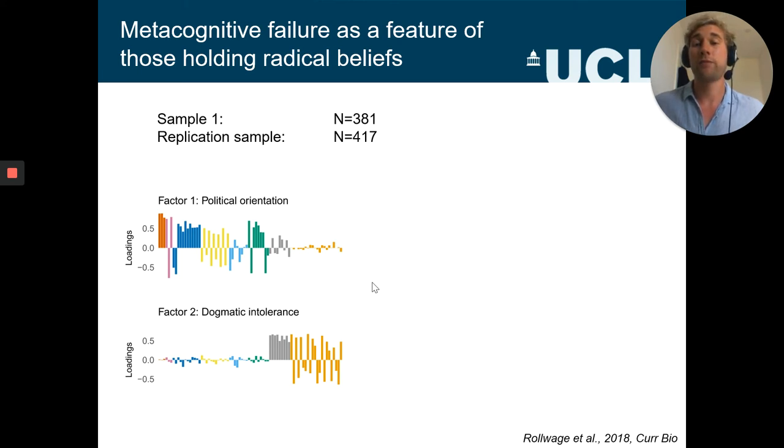The first factor measured political orientation on a single dimension from left to right. And the second factor was labeled dogmatic intolerance. That is the second factor we were mainly interested in, and this measures something like general belief rigidity as well as intolerance for opposing political beliefs.